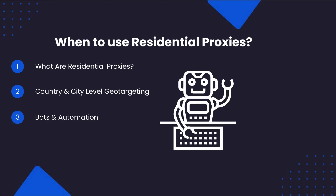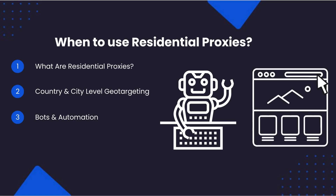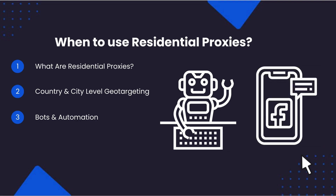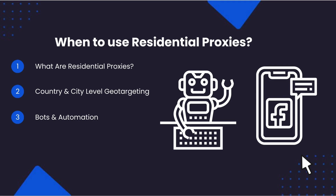Residential proxies also have a real edge in the area of automated bots that simulate the behavior of real users to log into websites and take actions — be it buying a sneaker from an e-commerce store during a sale, or automating a Facebook or Instagram account. Requests from static residential proxies are much harder to detect than data center proxies when the bot is logging into the website, so they are a great choice for these use cases.